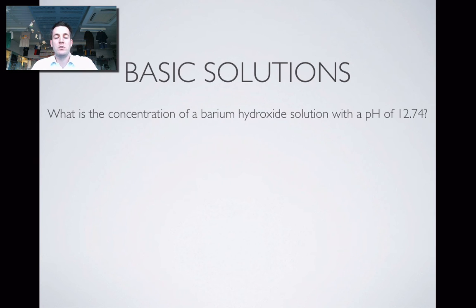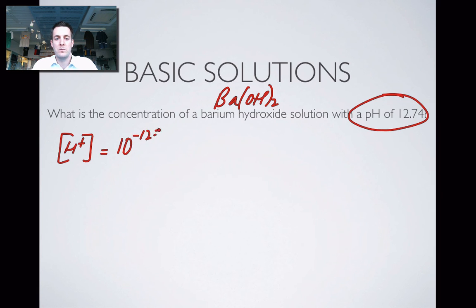Moving on to our final problem for this film. What is the concentration of a barium hydroxide solution with a pH of 12.74? Barium hydroxide has this formula: Ba(OH)2. We're told the pH of 12.74. So in other words we know that the concentration of H+ ions is 10 to the minus 12.74, and I can't do that in my head, so I've done it on my calculator and that's 1.82 times 10 to the minus 13.